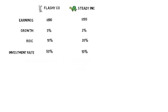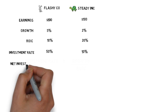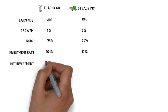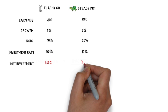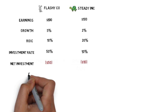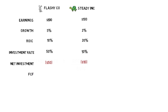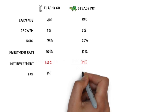Using the investment rate, we can then calculate the net investment required in dollars. Then by deducting this net investment figure from the earnings, we get to the free cash flow for each business.